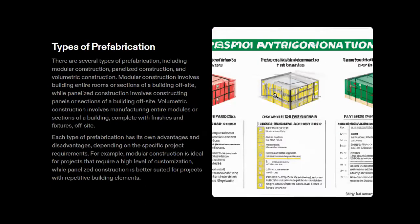Now the types of prefabrication. There are several types including modular construction, panel construction, and volumetric construction. Modular construction involves building entire rooms or sections of a building off-site. Panel construction involves constructing panels or sections off-site. Volumetric construction involves structuring entire modules or sections of buildings, complete with finishes, off-site. Each type has its own advantages and disadvantages depending on the specific project requirements.